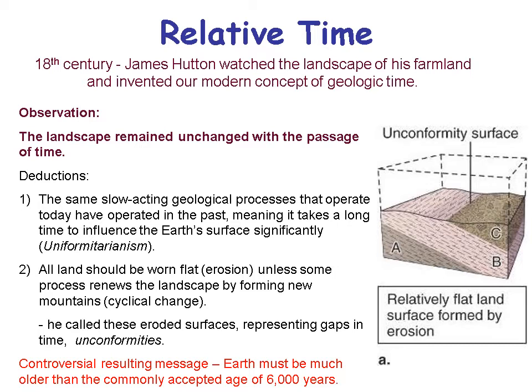In the 18th century, James Hutton watched the landscape of his farmland and invented our modern concept of geologic time. His observation: the landscape remained largely unchanged with the passage of time. His deduction: the same slow-acting geologic processes operating today have operated in the past — meaning it takes a long time to significantly influence Earth's form. We call this uniformitarianism. That doesn't mean catastrophes like near-Earth objects don't happen, but they're not the primary agent of what we see in Earth history.